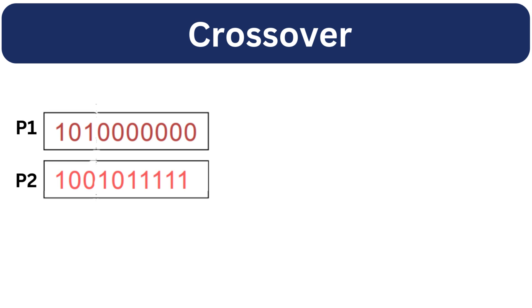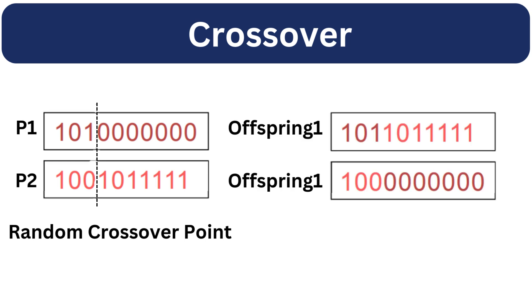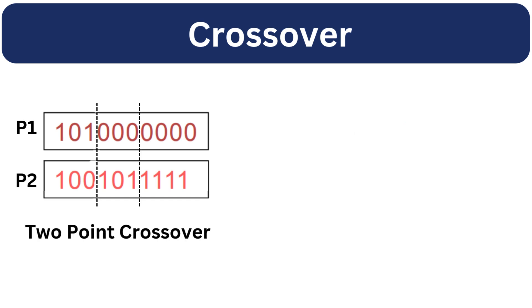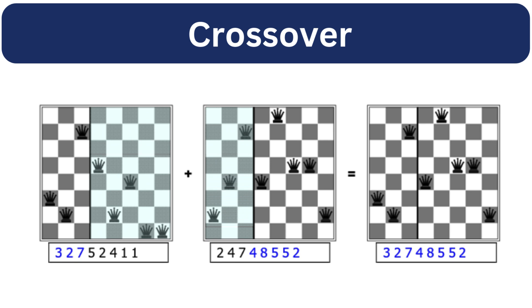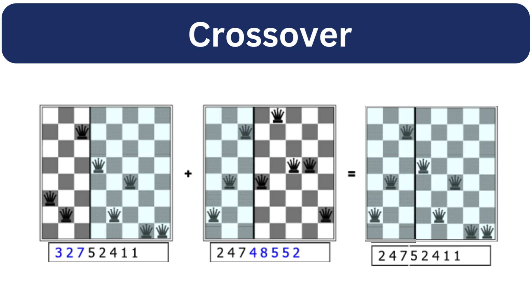Now comes crossover. This is how we mix the genetic material. You can have single-point crossover where you split two parents at one point and exchange the segments. So the first portion from parent 1 and the last portion from parent 2 combines to form a new offspring. Similarly, the first portion from parent 2 and the last portion from parent 1 combines to form a new offspring. We can also use two-point crossover where two random crossover points are selected and the segment between them is interchanged, keeping the rest of genes intact. We can also visualize the example of crossover on the N-queens problem.